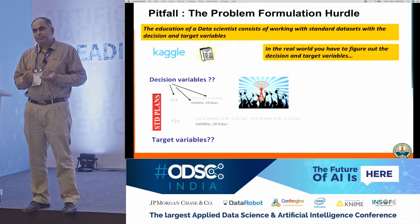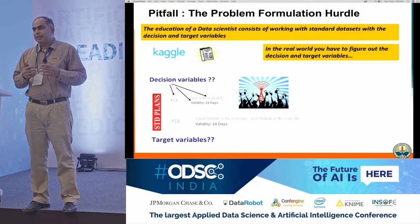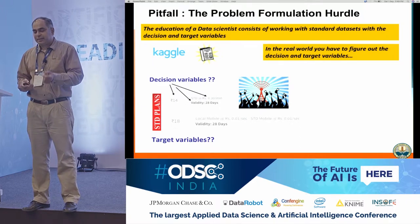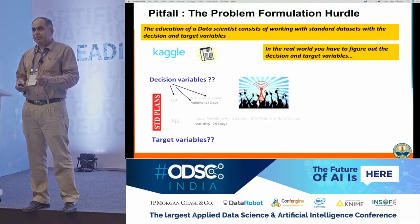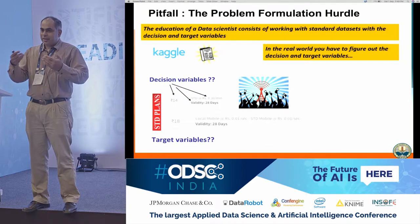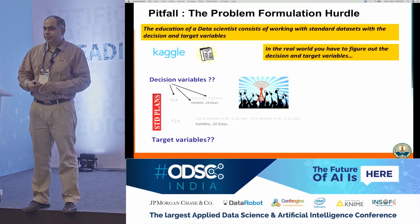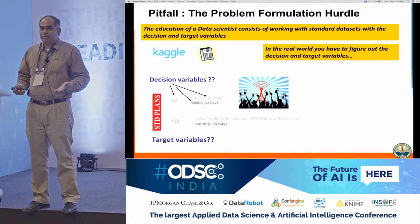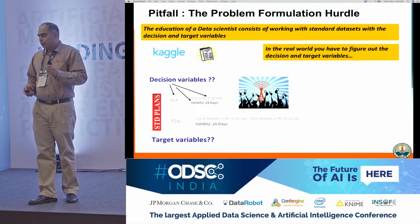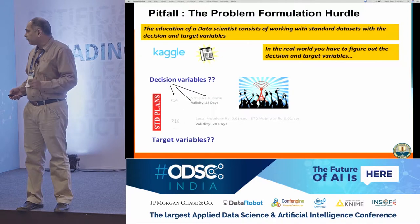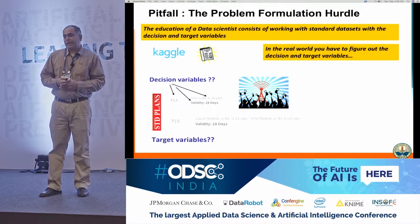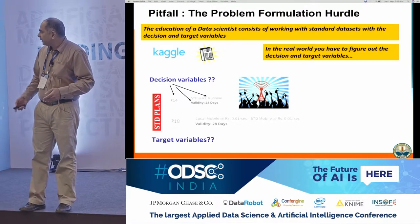But that doesn't make sense. What the customer wants is revenue increase. If you make the target variable the propensity to purchase the STD plan, you might end up giving the plan to customers who are already taking it, get 100% propensity, but because it's a lower rate, you might actually see a drop in revenues. What you really need to target is not the propensity, but actually the revenue increase. These are the kind of challenges we see when working with relatively inexperienced data scientists.